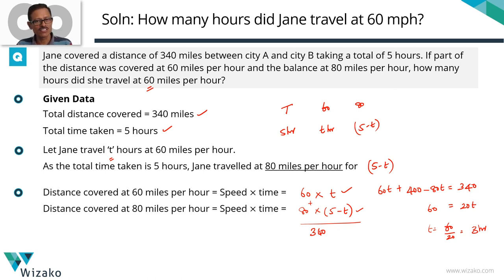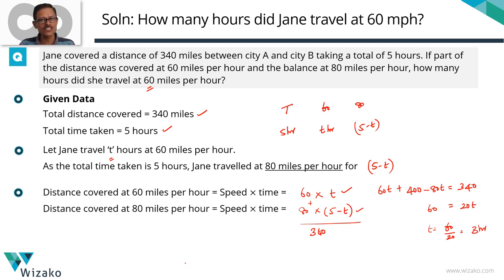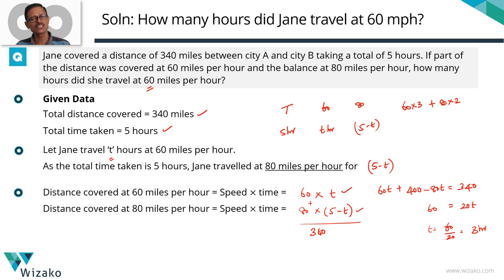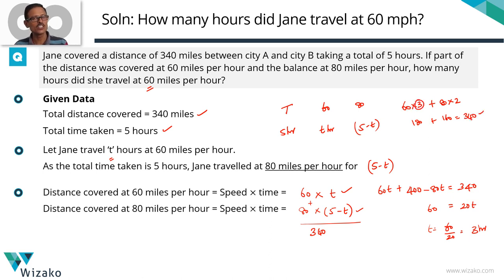Another way of solving this question is to work from the answer options. Try each answer option for the number of hours travelled at 60 miles per hour, then check the balance. If she travelled 3 hours at 60 mph, the balance is 2 hours at 80 mph. So 60 times 3 plus 80 times 2: 180 plus 160 equals 340. That checks out, so this would be the answer. Going from the answer options is probably a very good approach for this question.